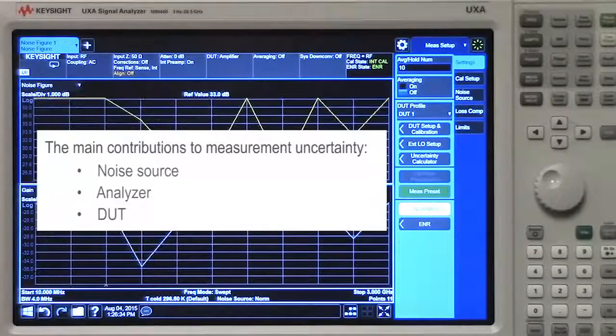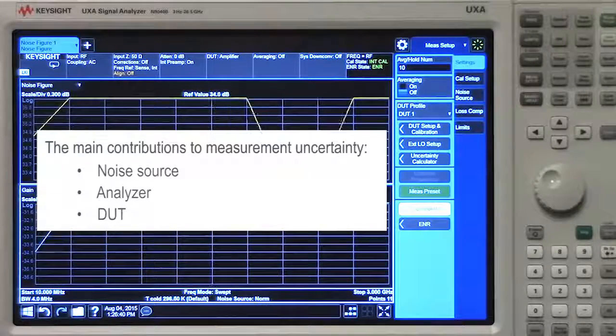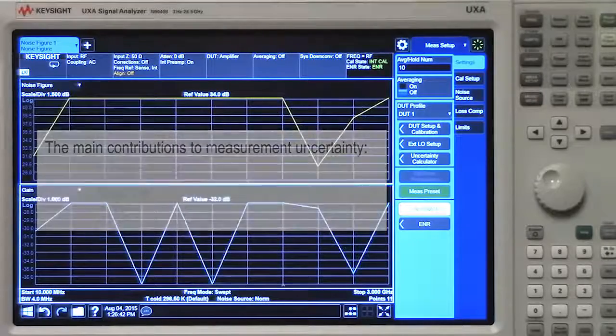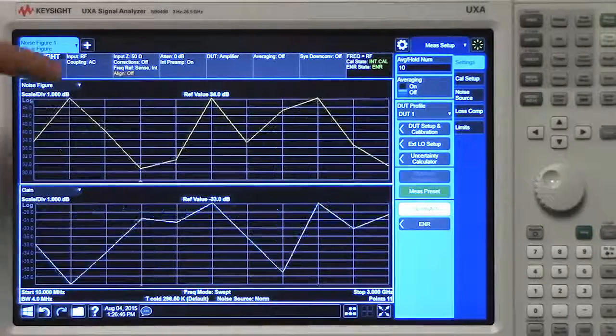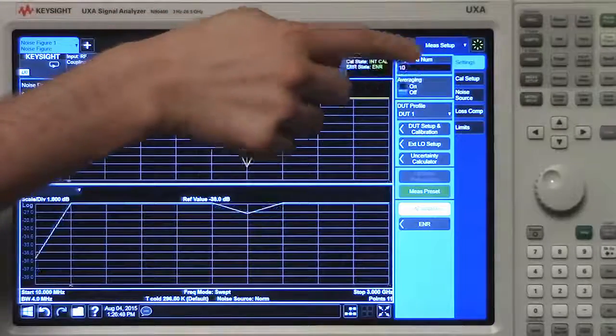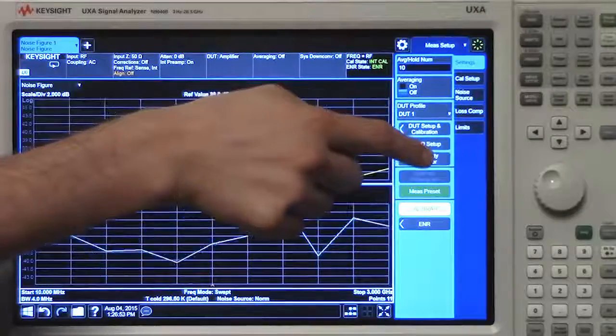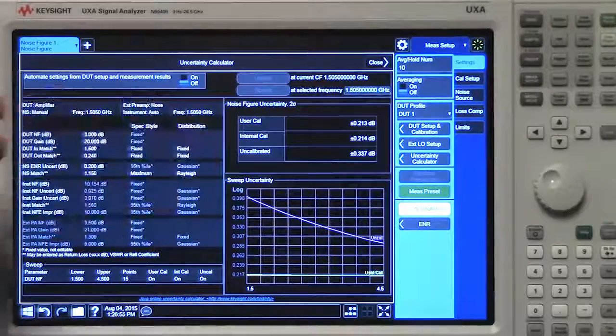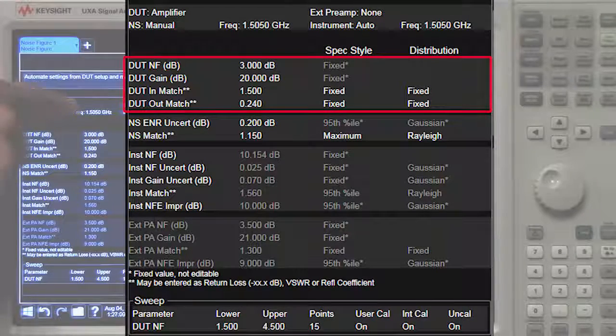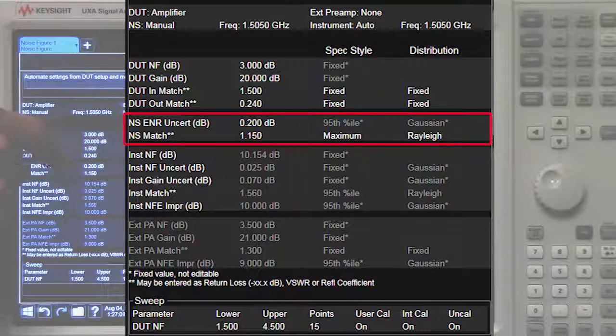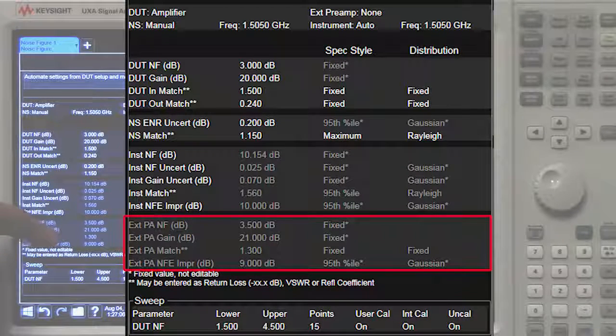We need information about all three of these in order to get reliable uncertainty readings. Let's see how connecting our smart devices can automatically populate the necessary fields and save us some valuable time. Let's go to the measurement setup menu panel and press uncertainty calculator. Right now, we have fields for the device, the noise source, for the analyzer, and an optional external preamp.